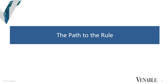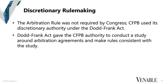One thing that makes this rule unique is that it's a discretionary rulemaking — meaning the CFPB was not told by Congress that they have to go out and ban class action waivers in arbitration clauses or require reporting. This was something the CFPB believes it had authority to do because it conducted a study as directed and also has a degree of authority under the Dodd-Frank Act to make rules consistent with that study that are in the public interest. But it's different from most of the rulemakings I worked on at the CFPB, which many were around mortgage.